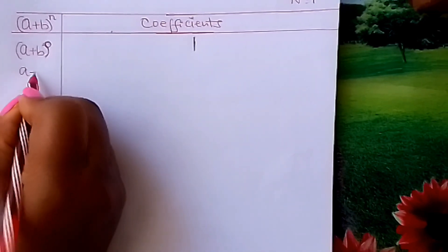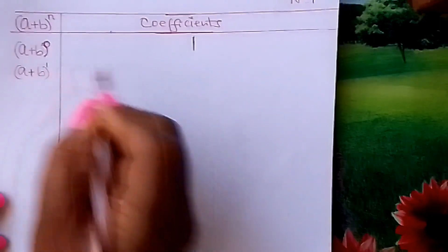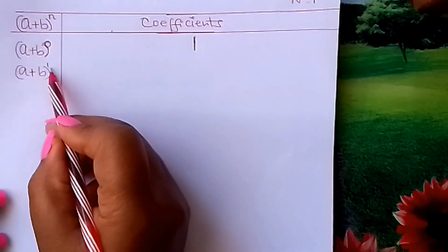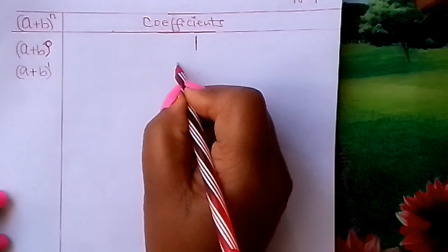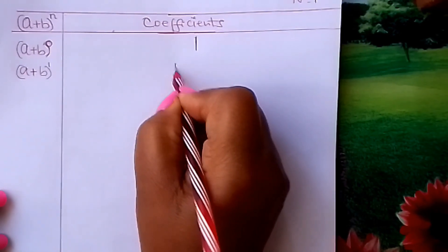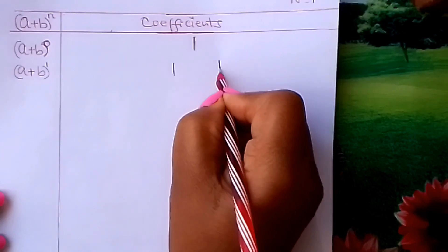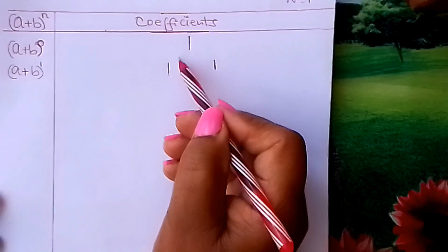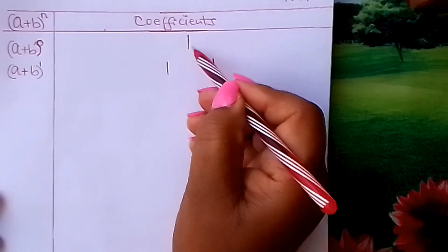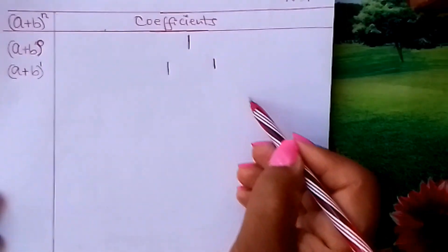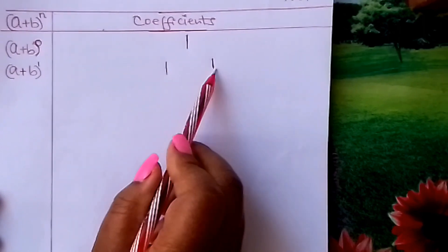We move to another binomial: (a + b) raised to 1. What is (a + b) raised to 1? You can write a 1 here, and add a 1 on the other side so that you form a pattern — the 1s will flow down through here and slide that way. That is why you fix 1 here and the other one there.